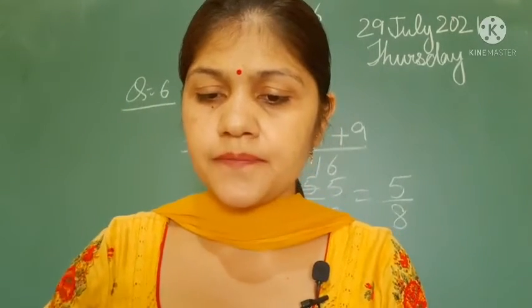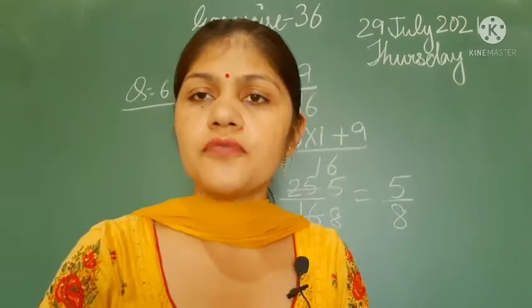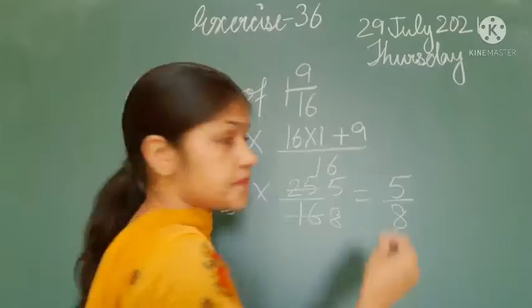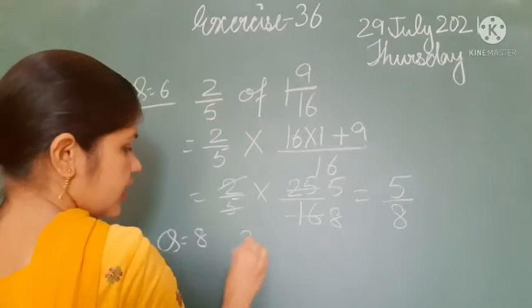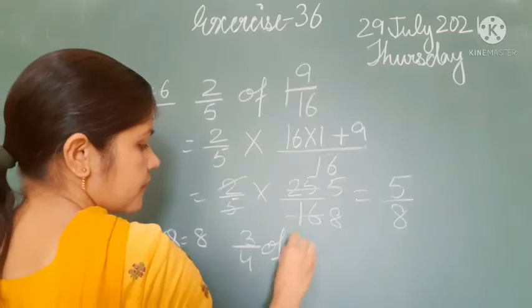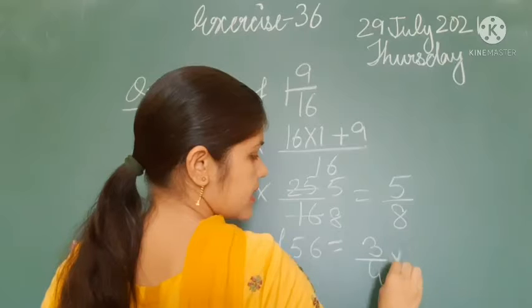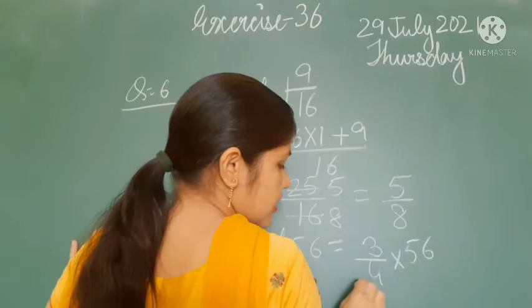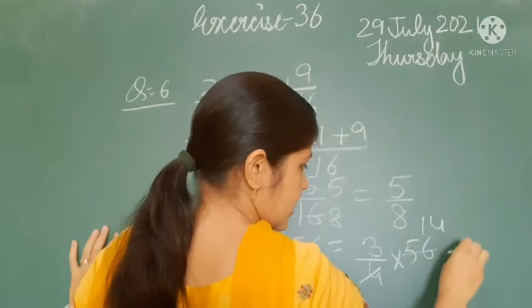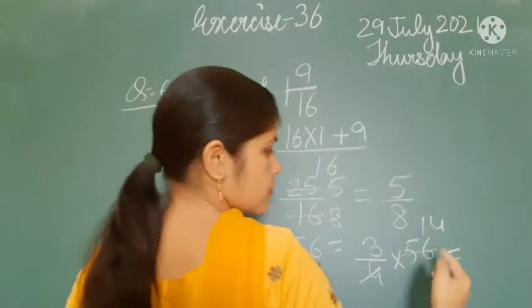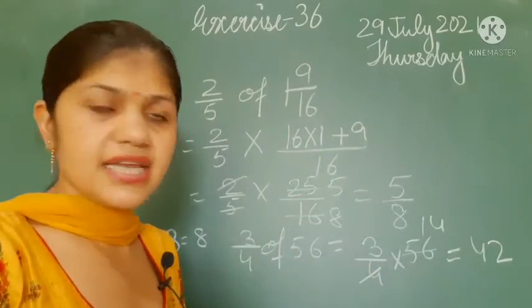Question number 8: 3 by 4 of 56. It can be written as 3 by 4 multiplied by 56. 4 fours are 16 — cancel — and 14 threes are 42. The answer is 42.